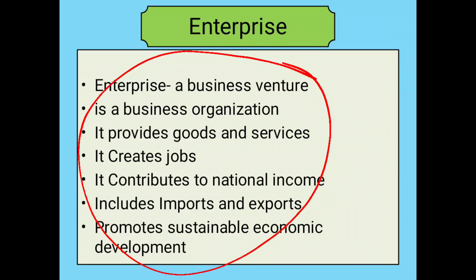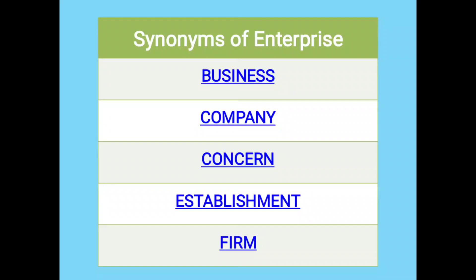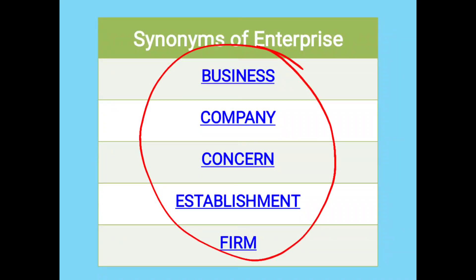I hope you have understood the word enterprise. There are synonyms to the word enterprise — business, company, concern, establishment, firm. Sometimes a business is called an enterprise, sometimes a company is called an enterprise, sometimes a concern is called an enterprise, sometimes a particular establishment is called an enterprise, and usually any firm is called an enterprise. I hope now you are clear with the word enterprise.